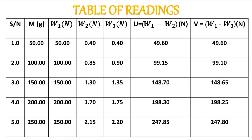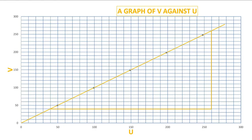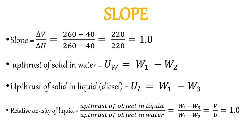According to the question, we plot a graph of V on the vertical axis against U on the horizontal axis. Plotting V against U gives a perfect straight line passing through the origin. The axes are clearly distinguished, the scale is clearly chosen, all points are clearly plotted, and the line of best fit is drawn. Computing the slope as the change in V over the change in U, we get a value of 1.0.